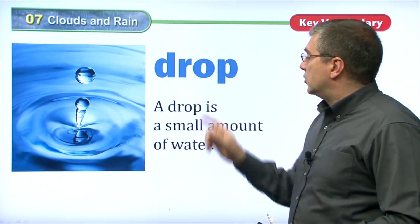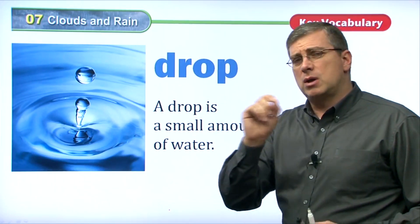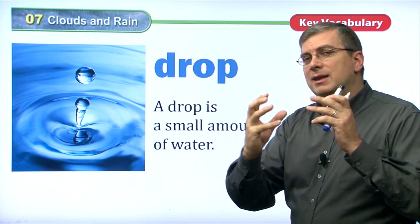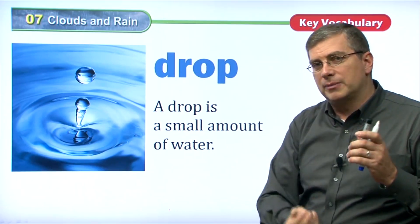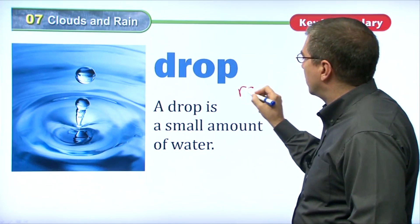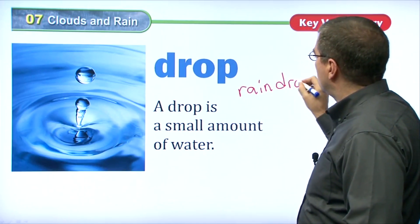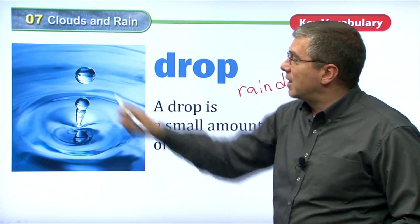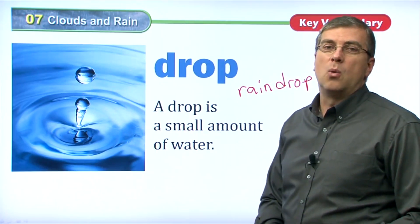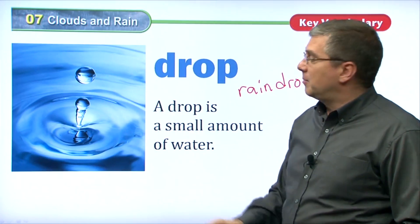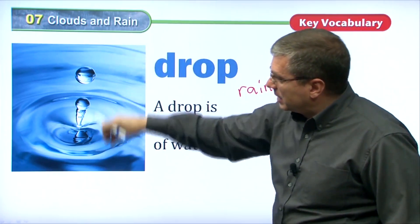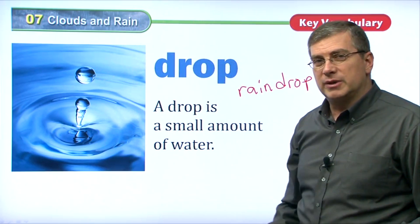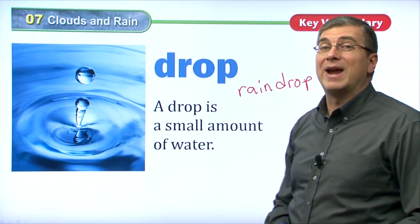A drop is a small amount of water. When those clouds get together and the water in the clouds gets together a lot, they become heavier and fall as single drops — raindrops. A drop of rain is a raindrop. When water falls from the sky, from the clouds, that is a raindrop.